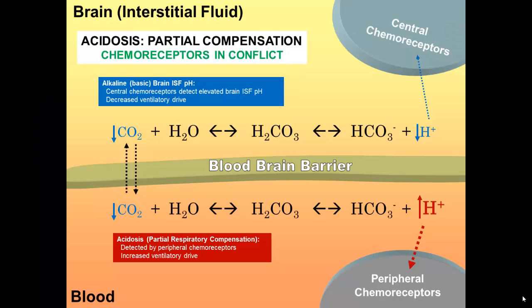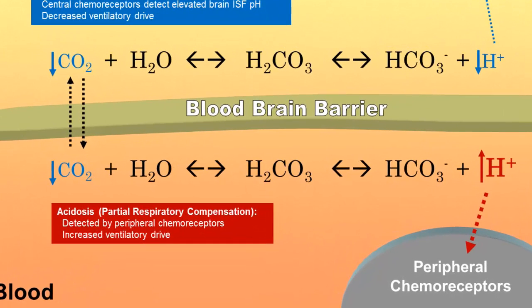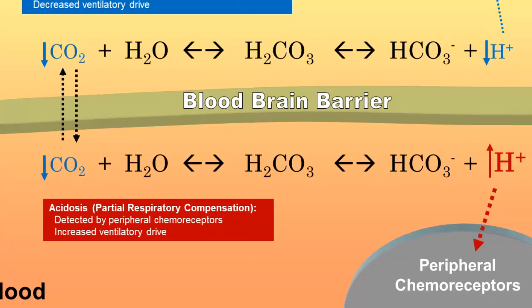As part of the compensatory response, as I mentioned a moment ago, the peripheral chemoreceptors are going to try to increase ventilation to decrease the partial pressure of carbon dioxide, to try to blow off that CO2. So by mass action, this is going to cause there to be a decrease in that free proton concentration within the blood.